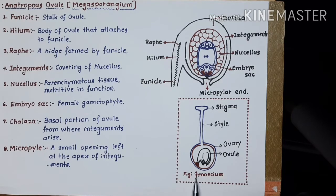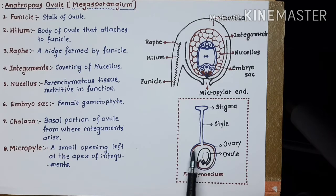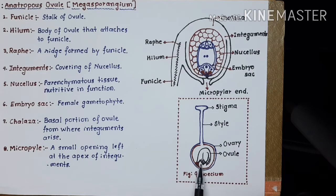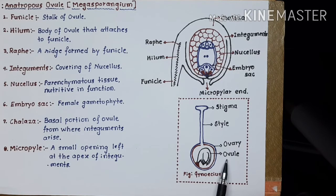You know that this is the figure of gynecium. In gynecium, you are observing three distinct parts. The first one is stigma, second one is style, and the basal portion is called ovary. Within the ovary, there is a chamber called the locule, and this locule encloses a structure called the ovule. Within this ovule, the female gamete is going to be produced. That's why the ovule is regarded as the female gametophyte of the flower.